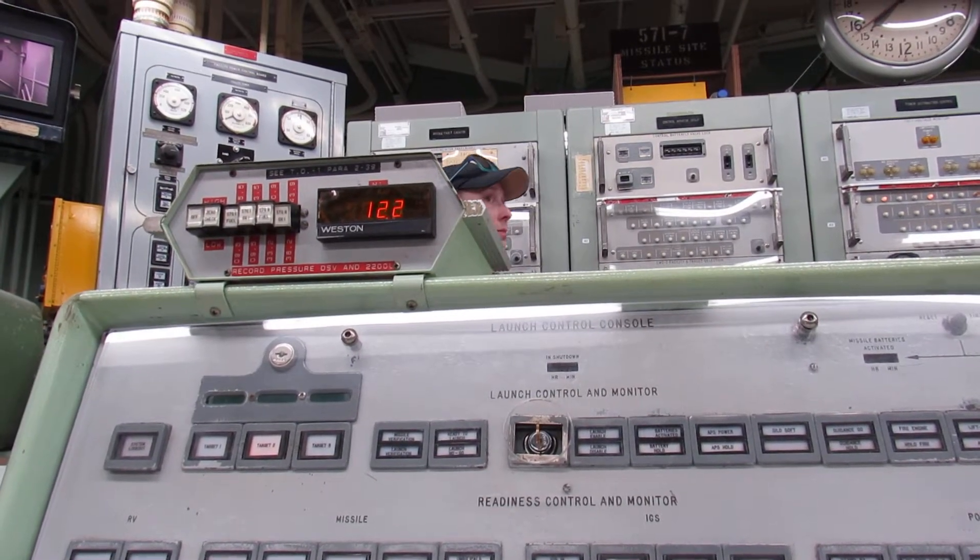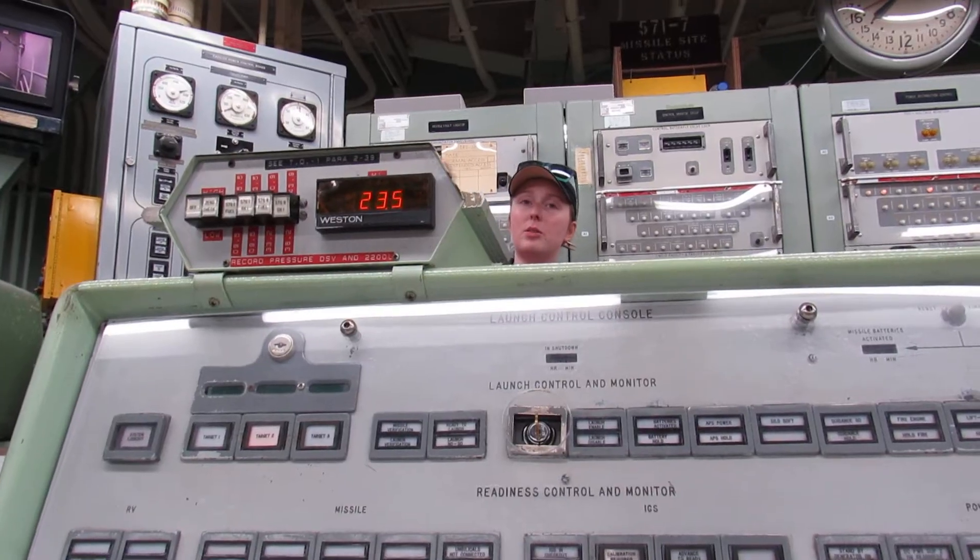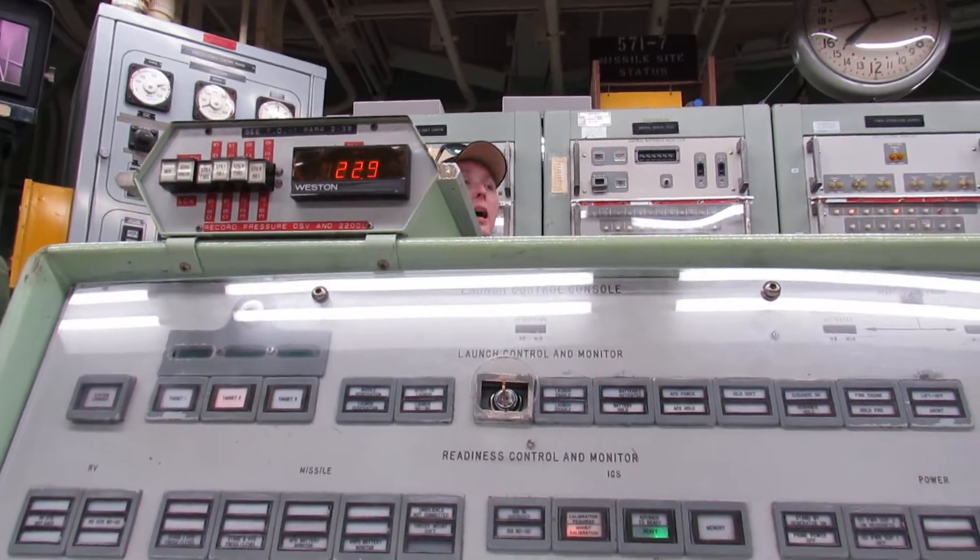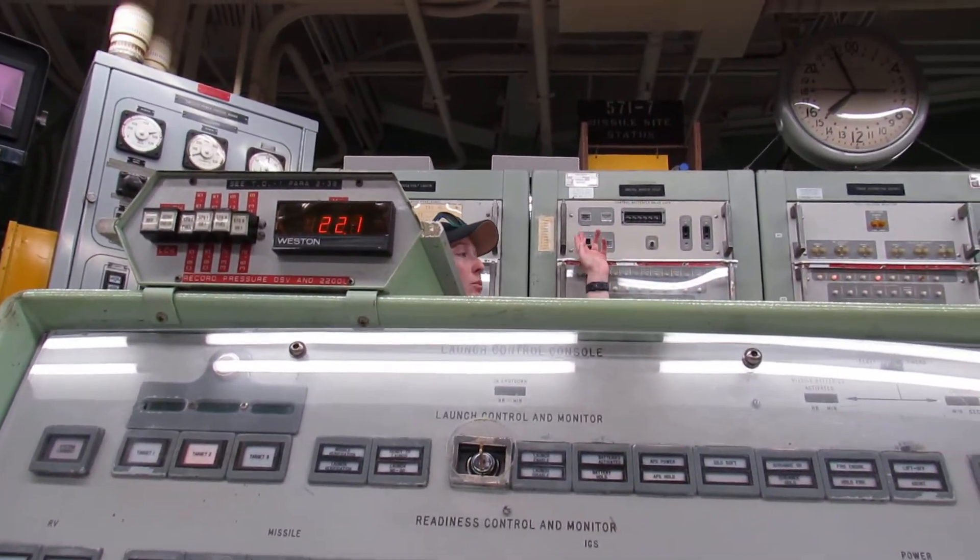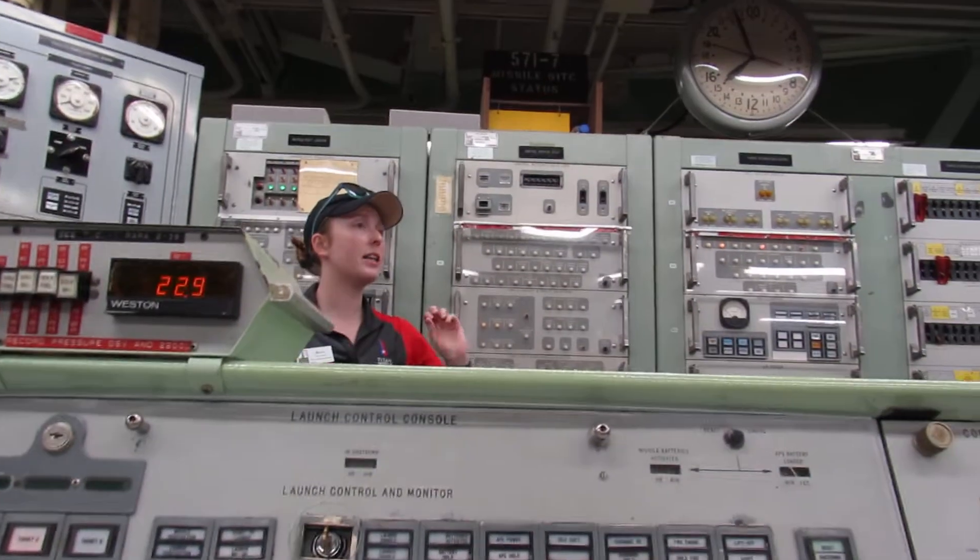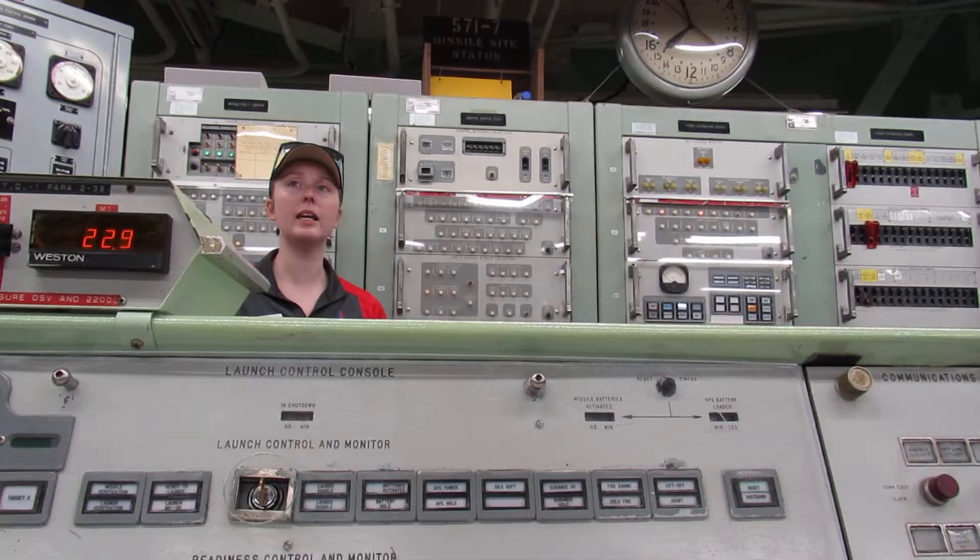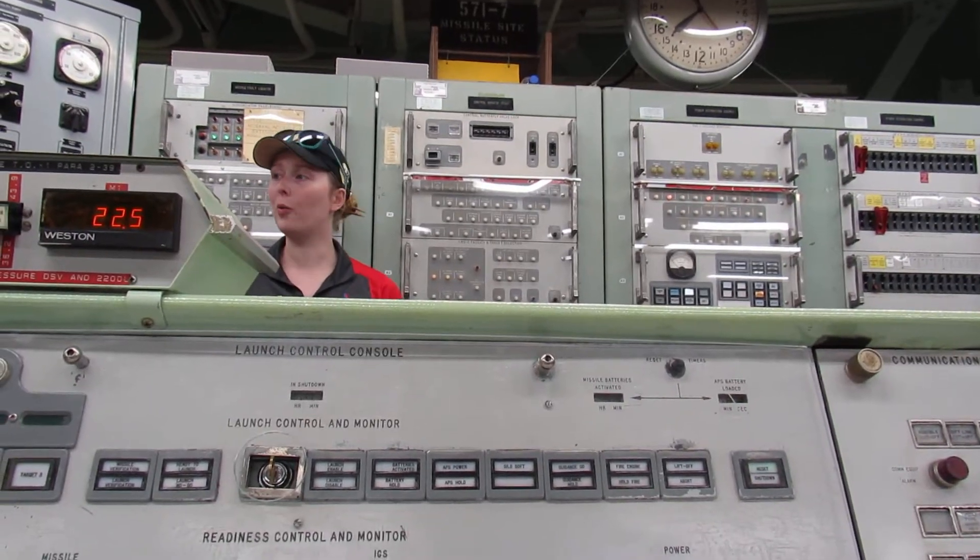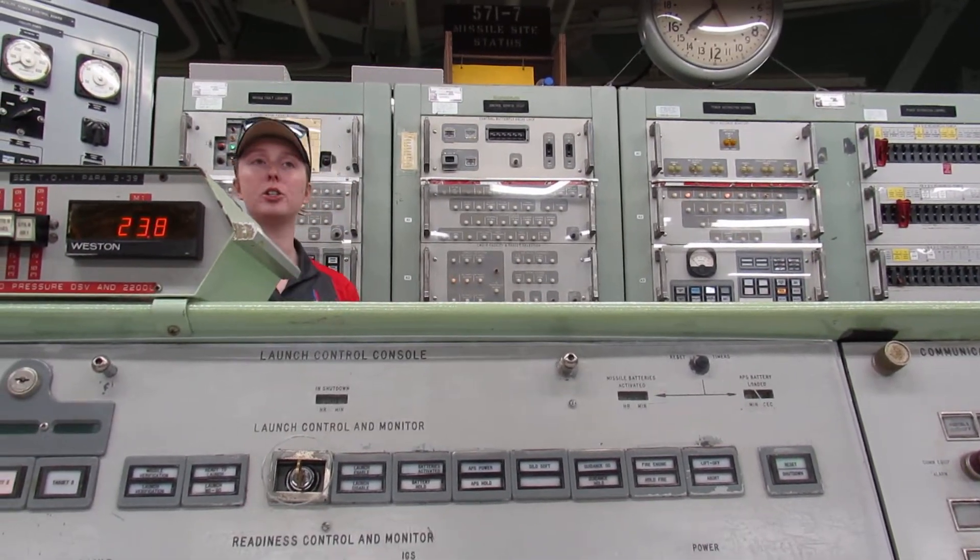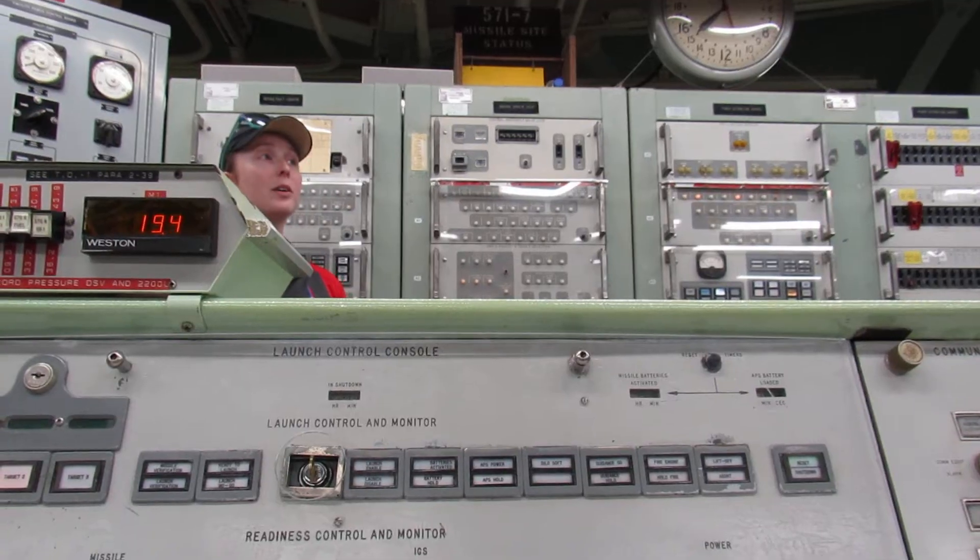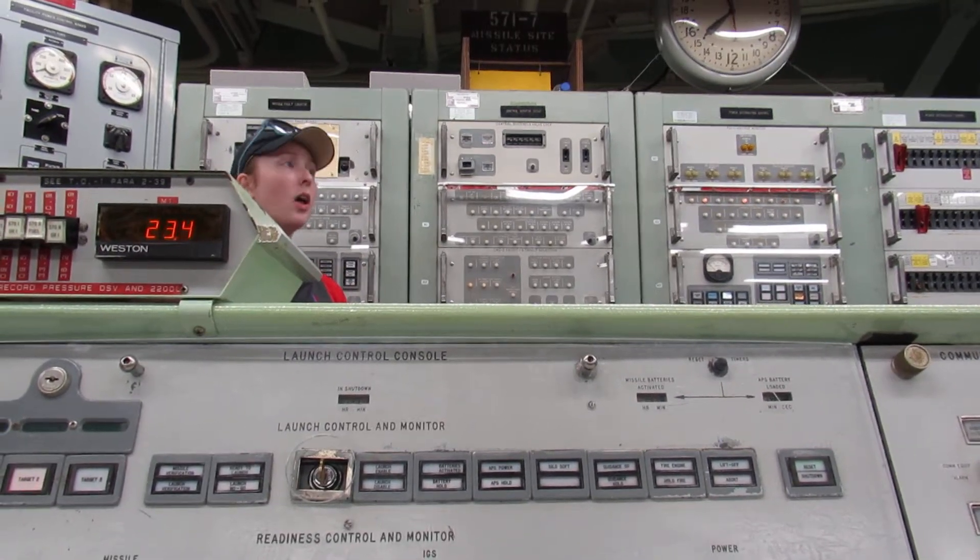And the only time you're going to see this code as a crew is if you're actually launching your missile. Which means we're going to have to verify, right? Deputy's going to give the code to Commander. Commander will read it off to the BMAT. BMAT will insert it into the lock and press the test button. If that light turns green, we have a verified code. And we now have everything we need to launch our missile. Only thing left to do is wait for the launch time to get here. But like we said earlier, we probably don't have long to wait.